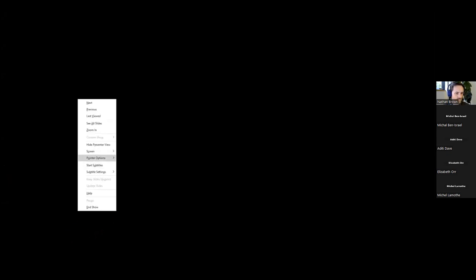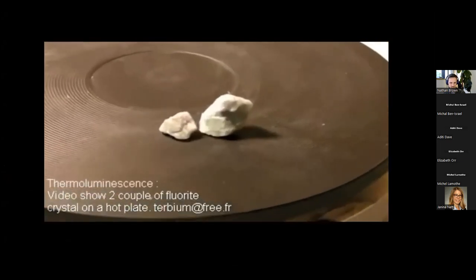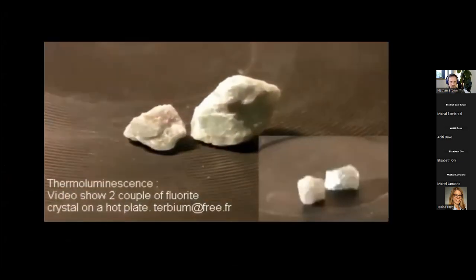You can do the same thing today with a heater plate. So this video will just show a piece of fluorite that's been irradiated and placed on a hot plate. And what you see is as the temperature of this hot plate continues to rise, the emissions, the luminescence emissions from the sample get brighter and brighter.